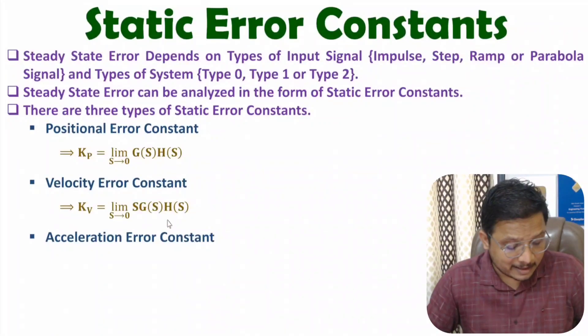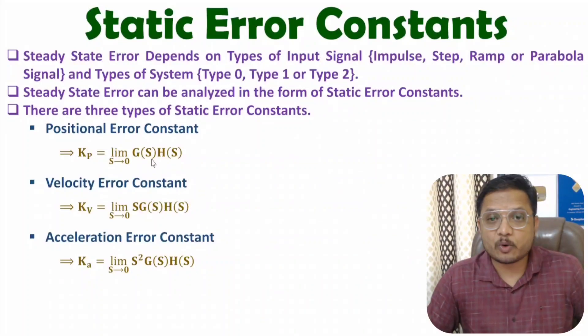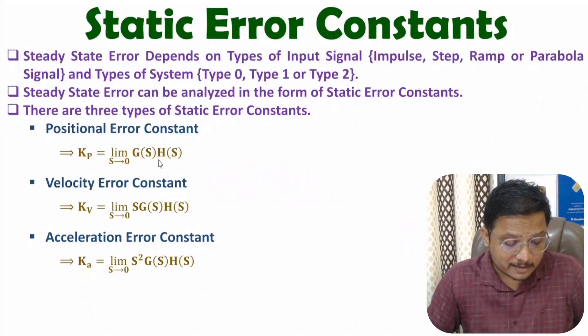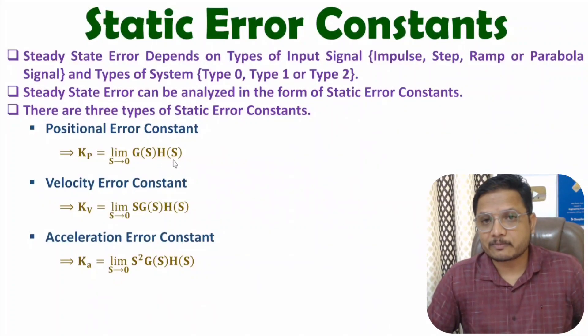Acceleration error constant is Ka and can be calculated by limit s tends to 0, s square into G(s)H(s). Here G(s) is the open loop transfer function of the system, and H(s) is the feedback gain.